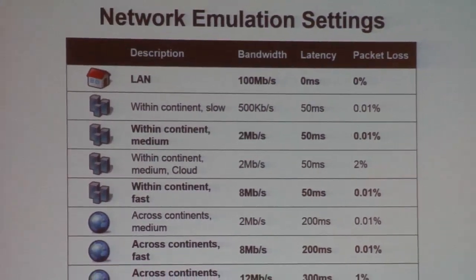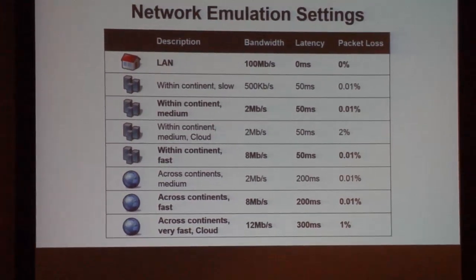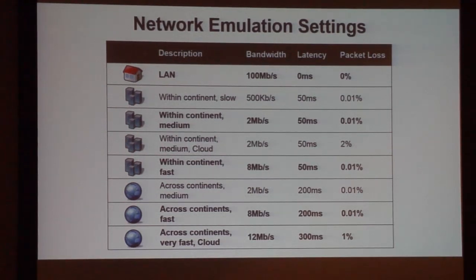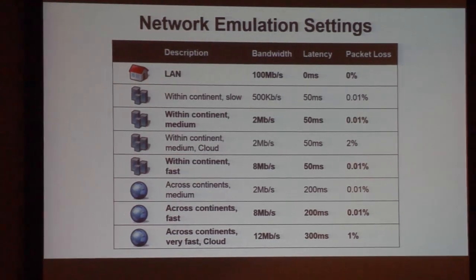The network emulation settings include LAN settings and settings in the range of 50 milliseconds latency with different bandwidths and typically very small packet loss, except for some scenarios where we added substantial packet loss to see how protocols handle it. We have 200 to 300 millisecond latency setups as well. The 50 milliseconds represents staying within a continent — 50 milliseconds gets you anywhere within the U.S. Typically intercontinental between the U.S. and Europe is only around 90 to 120 milliseconds. The 200 milliseconds is more like North America to APAC type latency.